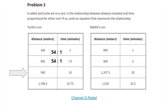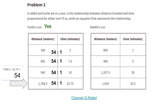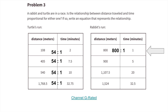540 divided by 10 is 54 — another 54 to 1 ratio. For the turtle's run, the relationship between distance traveled and time is proportional. For the rabbit: 800 meters to 1 minute is an 800 to 1 ratio. But 900 divided by 5 equals 180, giving a 180 to 1 ratio. We can already tell the relationship is not proportional for the rabbit's run, because 800 to 1 is a different ratio than 180 to 1.